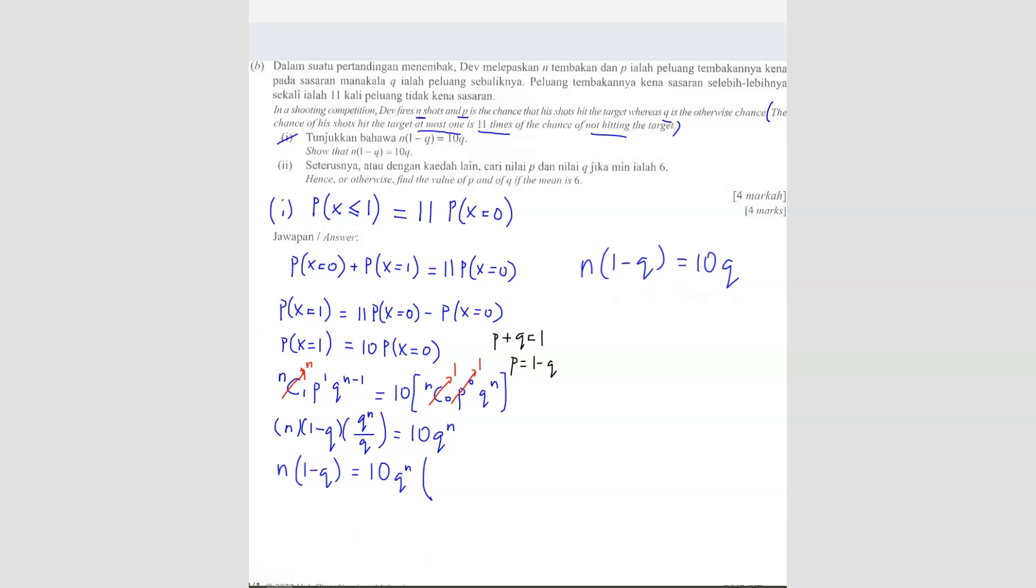So you have N bracket (1 minus Q) equals to 10Q^N. And then when you bring the other side, it becomes Q over Q^N. So here you can cut. So your answer will be N(1 minus Q) equals to 10Q. So that's what they want, right? So shown.